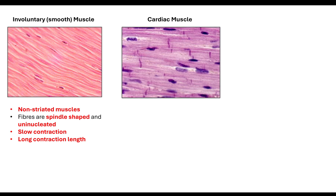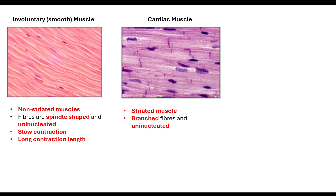Another type of muscle you need to know about is the cardiac muscle. The cardiac muscle is only found in the heart and is myogenic, because it is able to generate its own contractions without any signals. However, signals can increase or decrease the frequency. It is myogenic, so it's self-excitatory. Compared to involuntary smooth muscle, cardiac muscle is striated — it does have stripes. It has branched fibres, which means there are connections for electrical impulses to be sent along. It is also uninucleated — one nucleus.